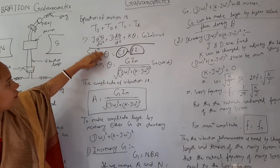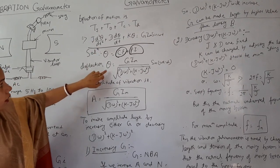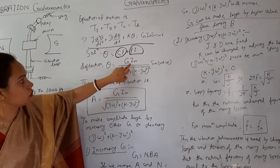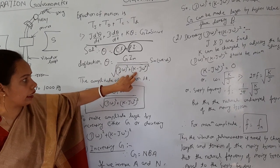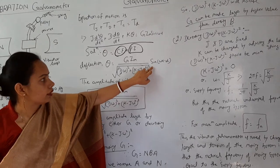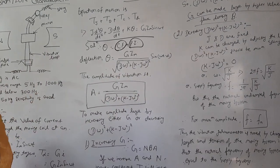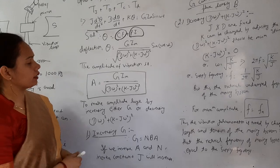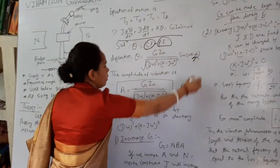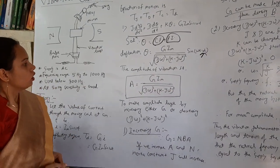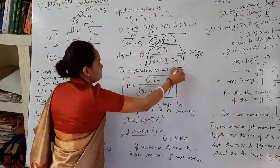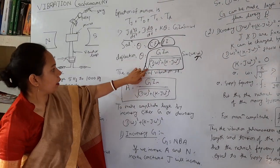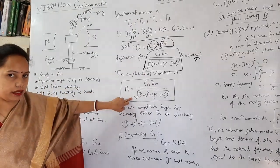So after solving, we achieve that deflection is equal to GI_m / √[(Dω)² + (K - Jω²)²] sin(ωt - α). And α is the phase angle deflected. And this amplitude is of vibration. This is your amplitude of vibration, how much it is vibrated.